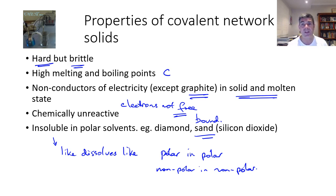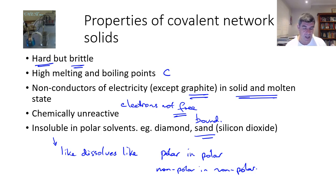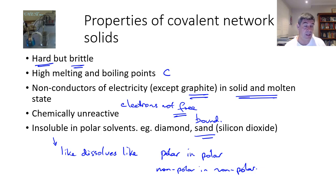Contrast the covalent networks with the ionics to get a sense of the differences. In fact, it's not a bad idea to start building a comparison table so you have each of these different types of solids compared side by side in terms of their structure, bonding, and properties. Thanks for watching.